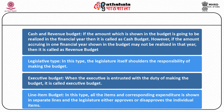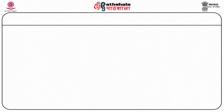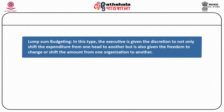Line item budget: in this type, all the items and corresponding expenditure are shown in a separate line and the legislature either approves or disapproves the individual items. Lump sum budgeting: in this type, the executive is given the discretion to not only shift the expenditure from one head to another, but also the freedom to change or shift the amount from one organization to another.